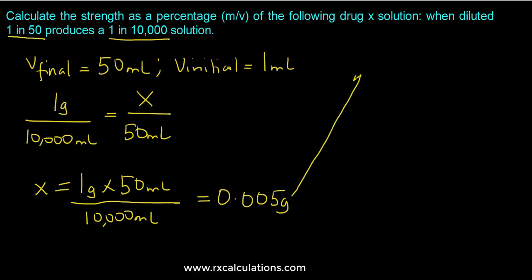Now that we figure this out, this 0.005 grams actually is in the 1 ml that was diluted down to 50 ml. So what that means is you have 0.005 grams in 1 ml.